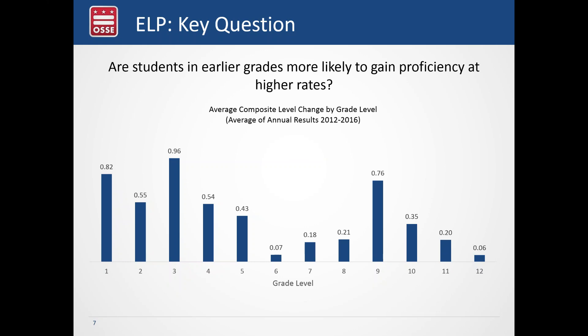Before moving on, are there any questions on English language proficiency? I should mention that the on-site discussion last week raised questions about n-size. Under ESSA we can consider n-size solely in the context of accountability, or we can have a different measure for accountability versus reporting. We'll need some n-size for both, and it's up to us whether those are the same or different.